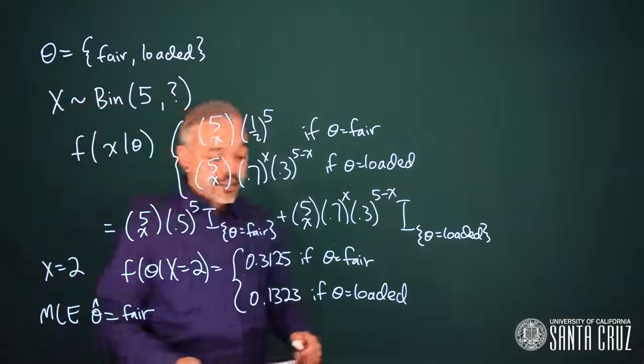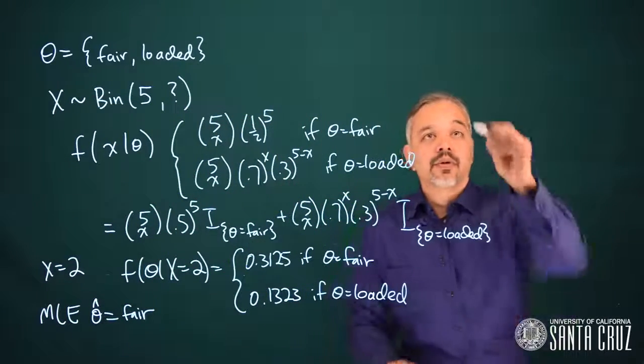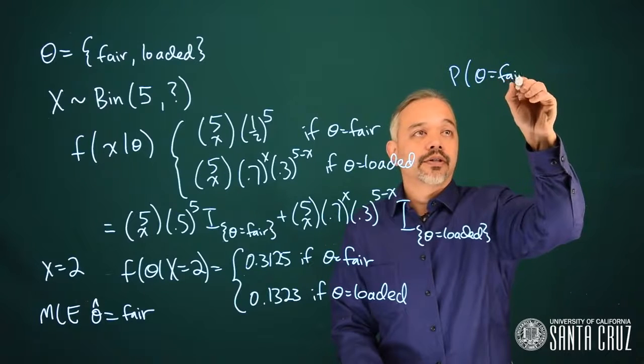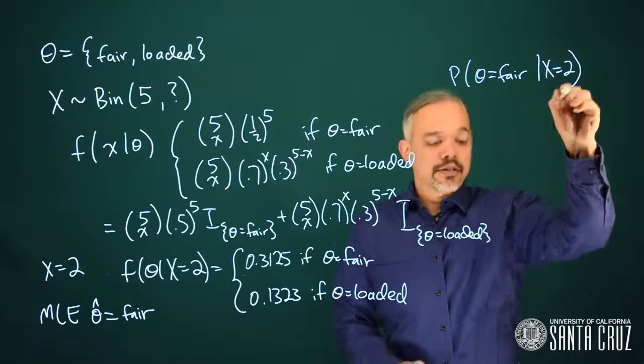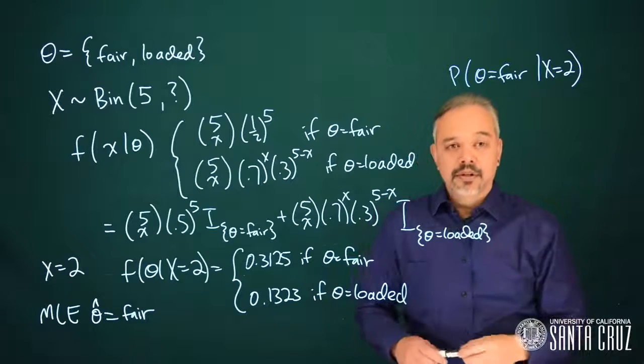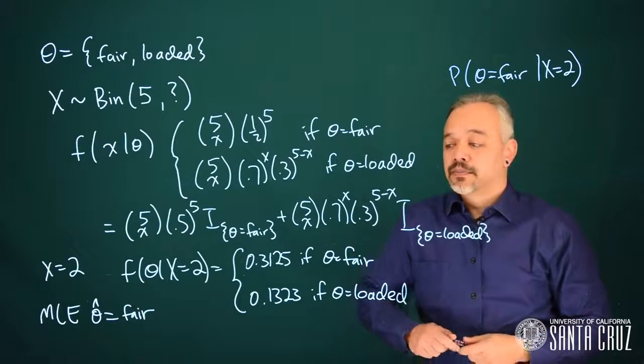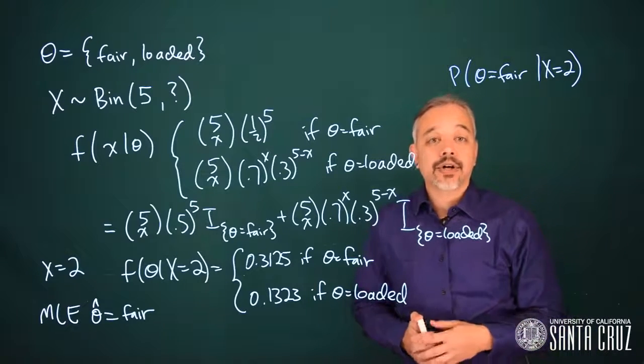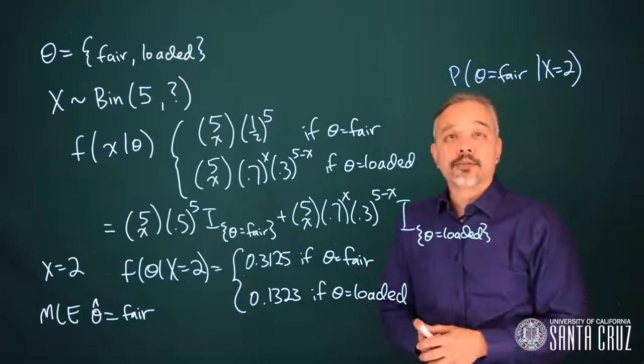Another question is that we might like to know, what is the probability that theta equals fair given we observed two heads? In the frequentist paradigm, the coin is a physical quantity. It's a fixed coin, and therefore, it has a fixed probability of coming up heads.